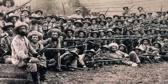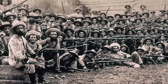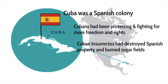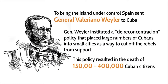The Cuban insurrectos had been destroying Spanish property and burning sugar fields, and the Spanish could either walk away from the colony and give it its freedom, or reinstate their authority over the island — which is the choice they make. So the Spanish sent to Cuba General Valeriano Weiler, whose nickname is The Butcher, and he's definitely going to earn that nickname.